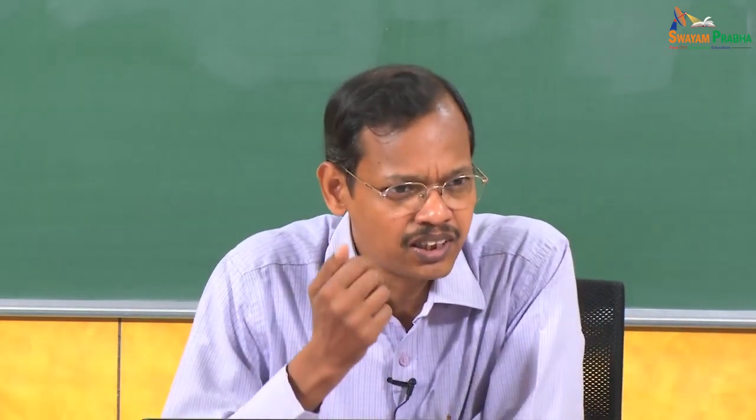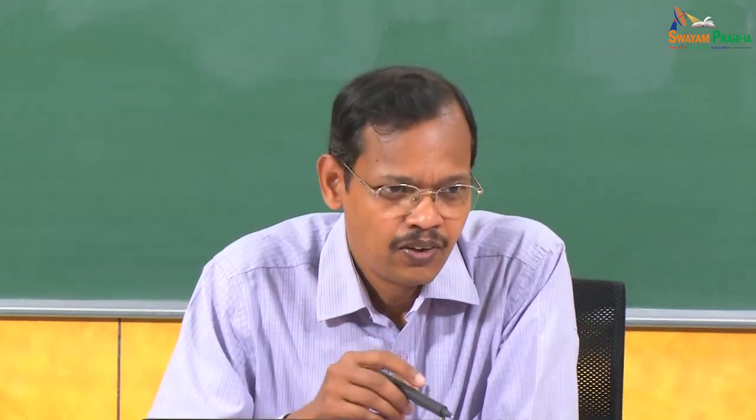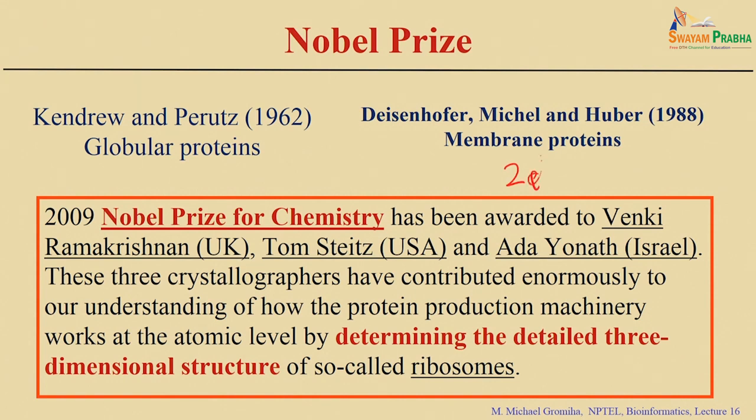Several researchers got the Nobel Prize for using X-ray crystallography to solve structures, starting from the discovery of X-rays and using them to diffract on crystals, from small molecules to larger ones. Bragg and Bragg showed that the path difference is the integral multiples of the wavelength, which is expressed by Bragg's law: 2D sinθ = nλ.